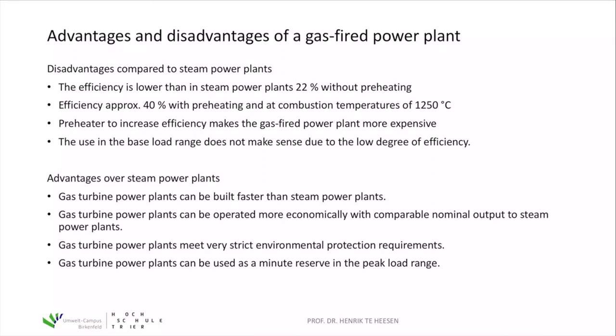However, the full load hours of a gas turbine are not that large, which reduces the economic efficiency of a gas power plant. Nuclear power plants achieve about 6,000 to 7,000 full load hours per year; coal power plants achieve 3,000 to 5,000 hours per year. A gas power plant typically has only about 1,000 to 2,000 full load hours, which makes the system more expensive per unit of electricity, as these plants are used to fulfill peak load rather than base load.